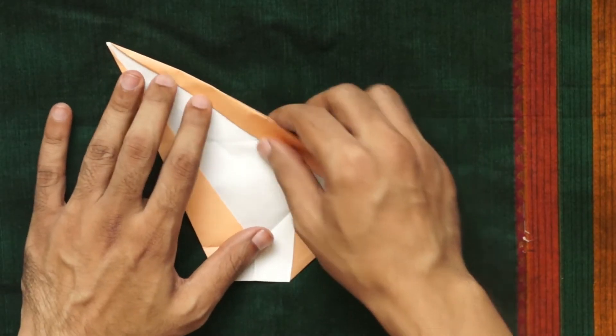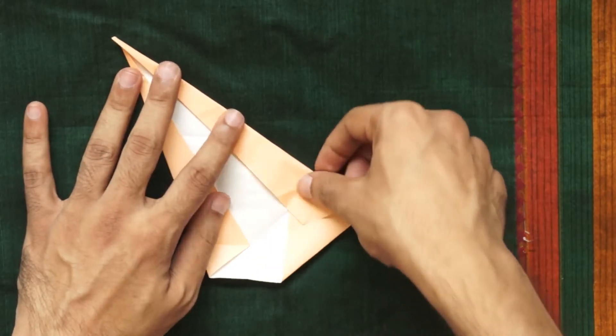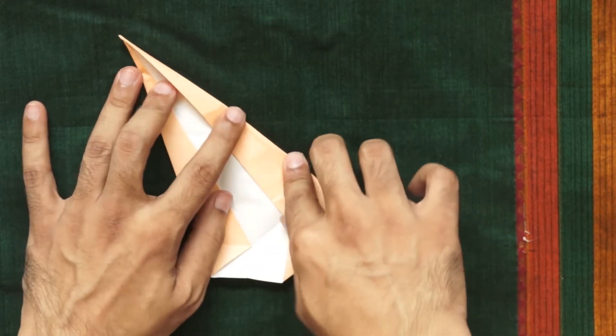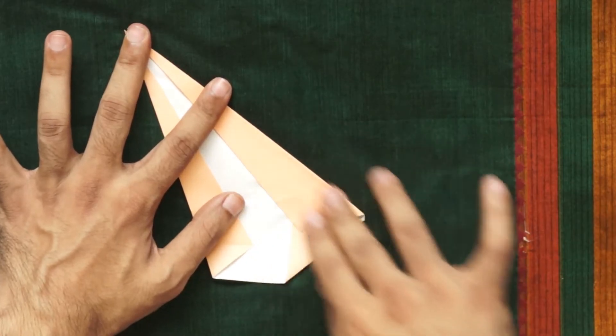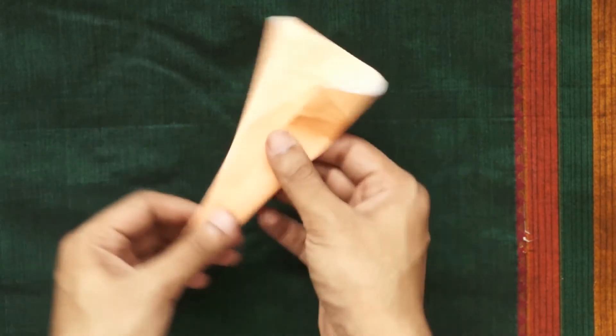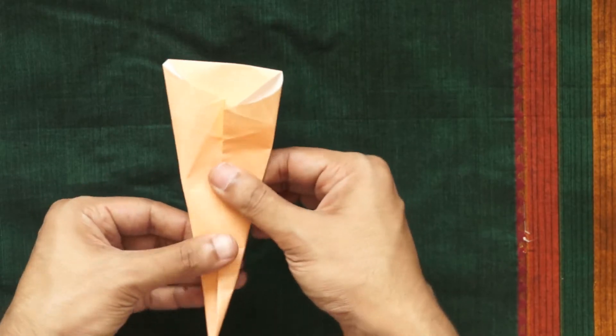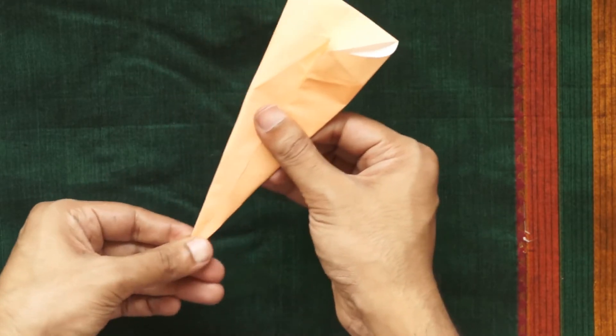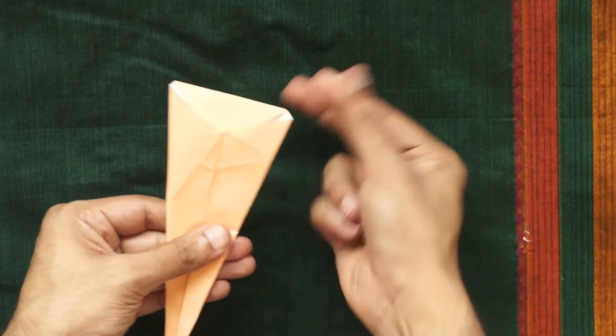Now fold in the side flaps towards the central line. Repeat on the other side to make it symmetrical. Open up the side flaps.